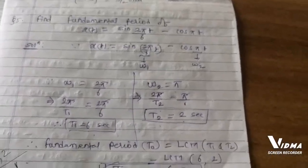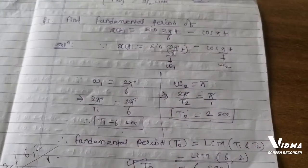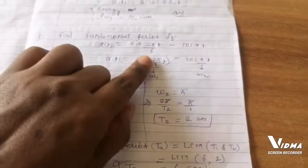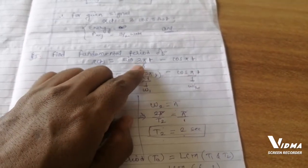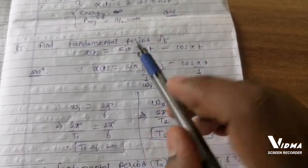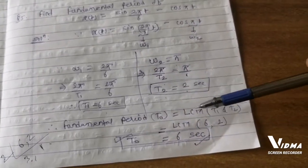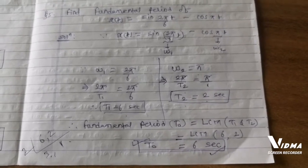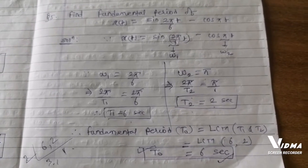I hope these two questions are very clear for understanding how to calculate the fundamental period of a signal which is a sum of more than one signal. We find the individual time periods and then calculate their LCM to get the fundamental period. For any queries, put your comment and I will explain with more numericals. Thank you.